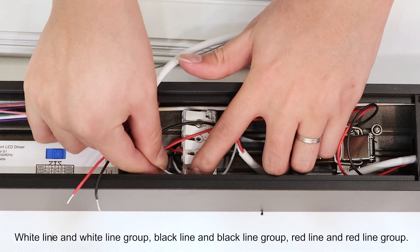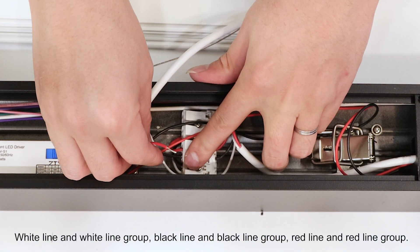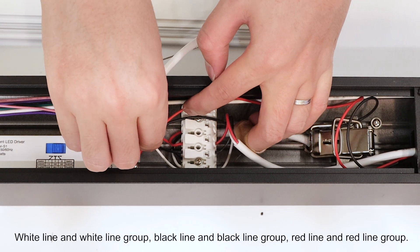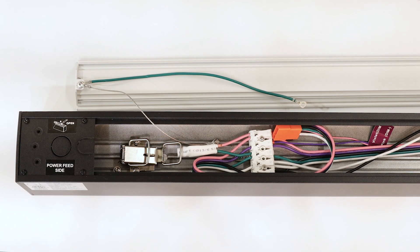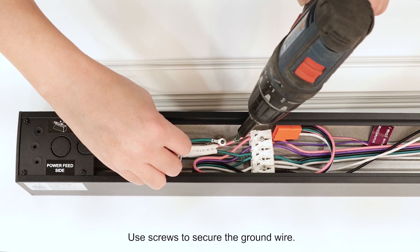High density model for uniform lighting. Use screws to secure the ground wire.